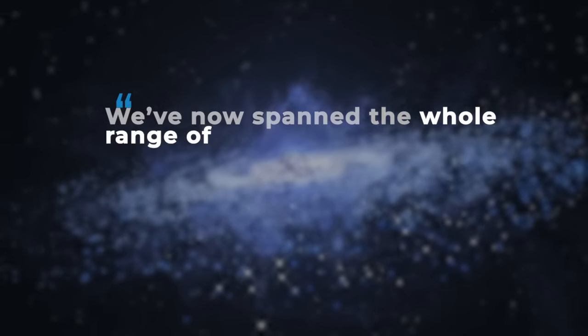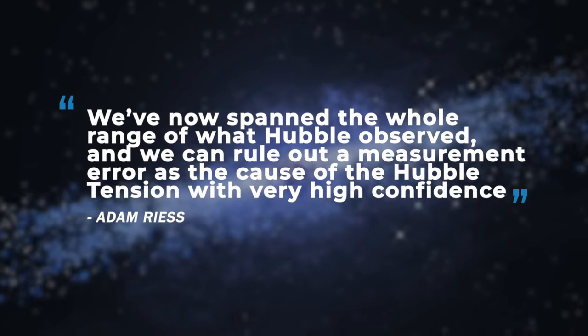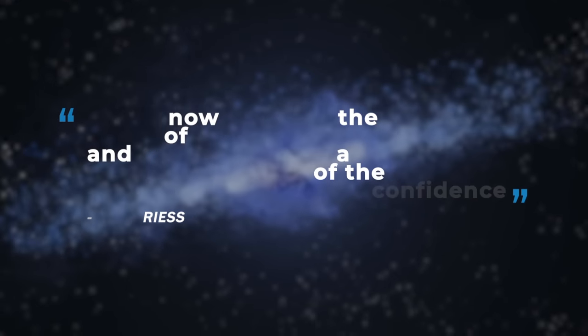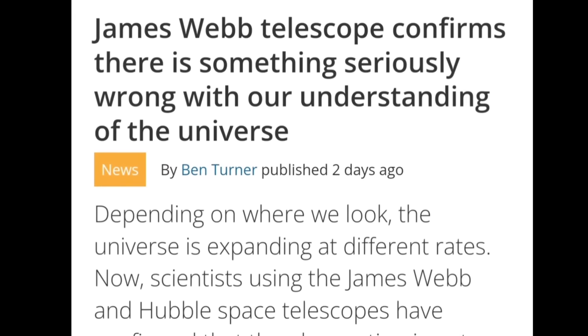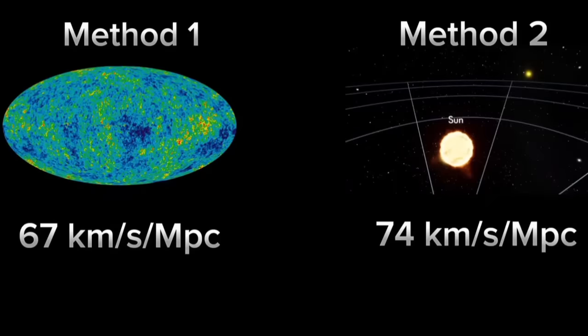Adam Ries, professor of physics and astronomy at Johns Hopkins University said, We've now spanned the whole range of what Hubble observed, and we can rule out a measurement error as the cause of the Hubble tension with very high confidence. Also, the new images of James Webb Telescope confirm that the previous measurements are correct, and the universe is expanding differently in different places. This discrepancy in the value of the expansion rate of the universe suggests that perhaps the universe is not the same everywhere.